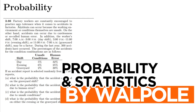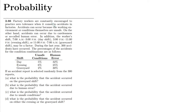Welcome back guys, this is question 2.66. The statement is: factory workers are constantly encouraged to practice zero tolerance when it comes to accidents in factories. Accidents can occur because the working environment or conditions themselves are unsafe, or on the other hand, accidents can occur due to carelessness or so-called human error. These are the two main factors found from the data available in the industry or factories.